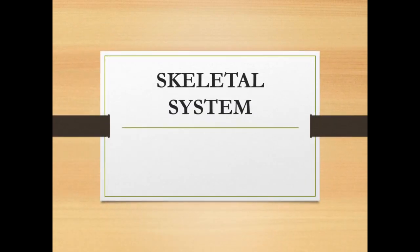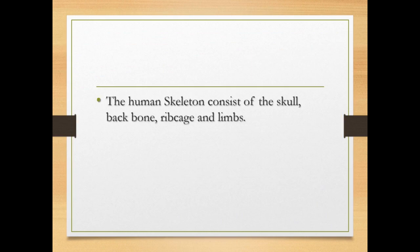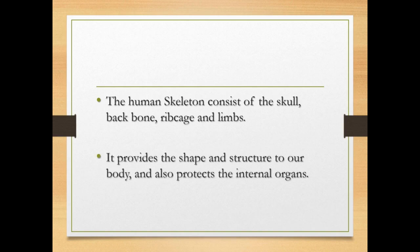Skeletal System. The skeleton is a framework of bones in our body. The human skeleton consists of the skull, backbone, ribcage and limbs. It provides the shape and structure to our body and also protects the internal organs.